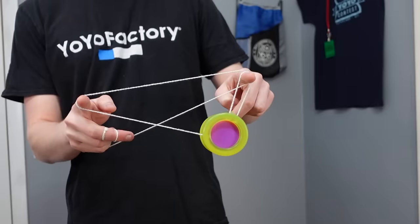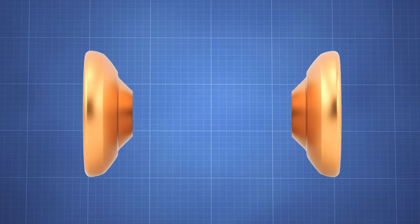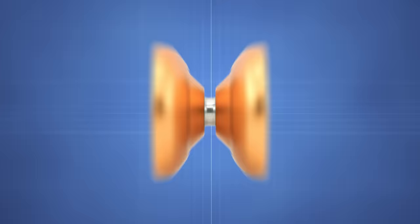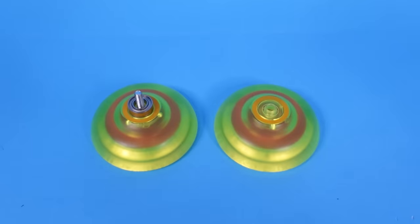Okay, so a yo-yo is basically made of three parts. There are two round halves and an axle to connect them together. And to make a yo-yo, I need to find items that resemble these components.